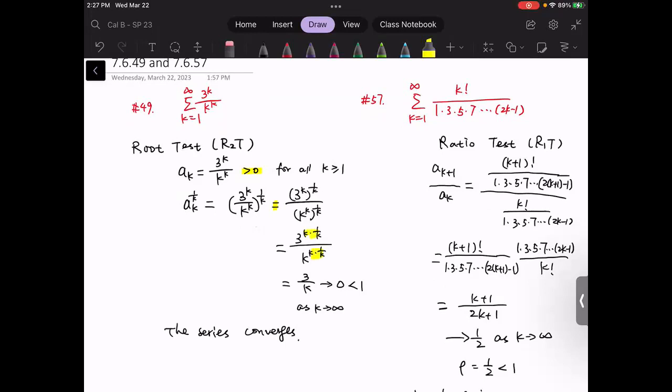We can cancel k, then this term becomes 3 over k, and it will converge to 0 as k approaches positive infinity.